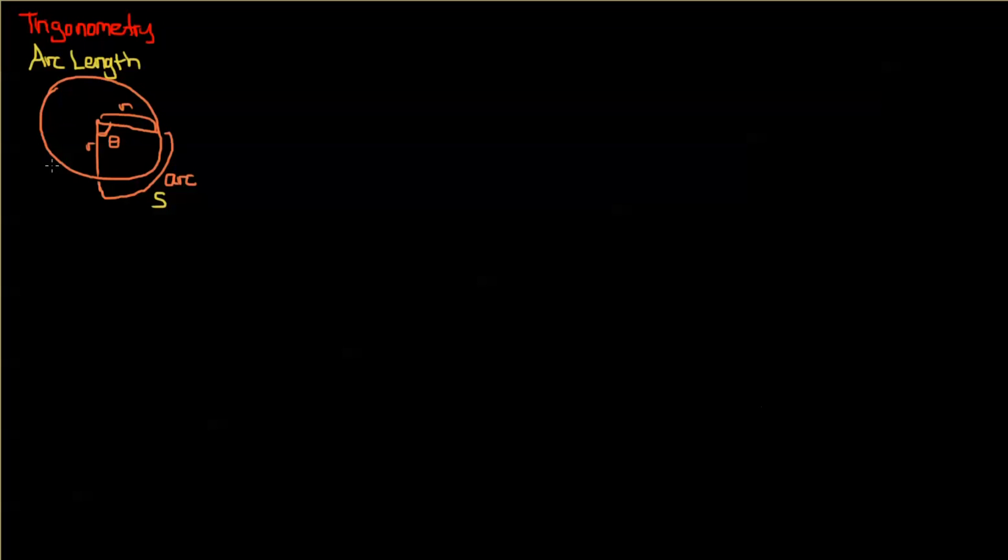So, the equation for finding the arc is pretty simple. The equation is s is equal to radius multiplied by theta. Now, it's basically saying the arc is equal to the radius multiplied by theta in radian measure. Now, in the last video, we talked about radians and degrees. So, at this point, you should be pretty familiar with them. Just keep in mind that we're using radians and we're not using degrees.